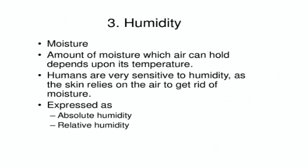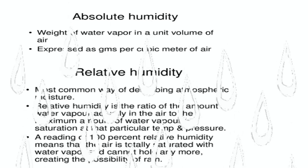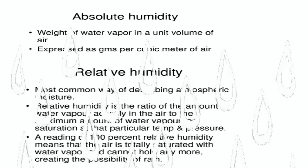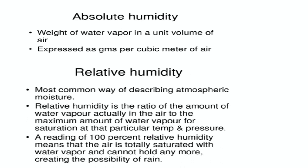The third topic is humidity. Humidity is the synonym of moisture. The amount of moisture which air can hold depends upon its temperature. Humans are very sensitive to humidity as the skin relies on the air to get rid of moisture. There are two types of humidity: absolute and relative. Absolute humidity is the weight of water vapour in a unit volume of air, expressed as grams per cubic meter of air. Whereas relative humidity is the ratio of the amount of water vapour actually in the air to the maximum amount of water vapour for saturation at that particular temperature and pressure.